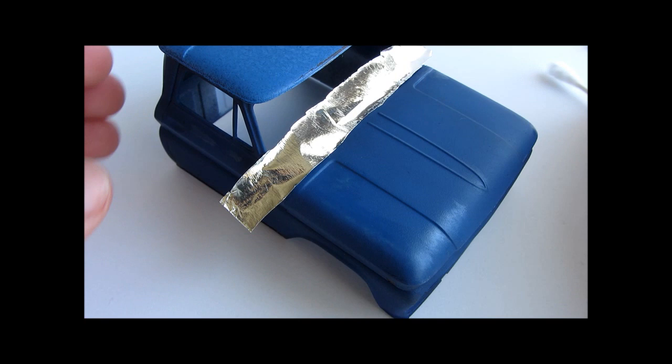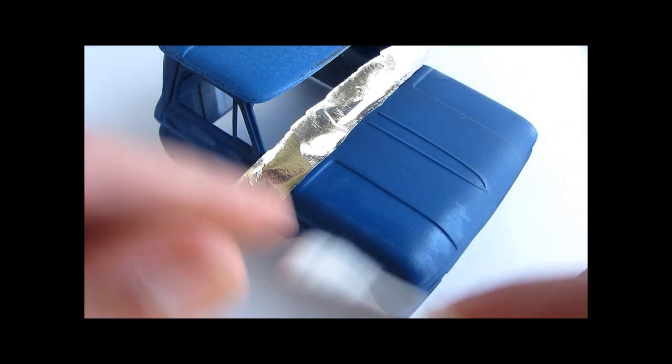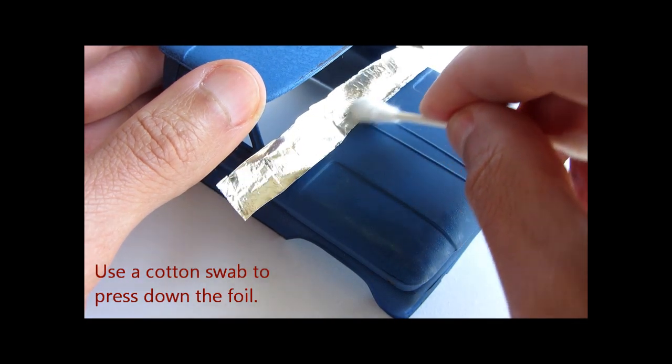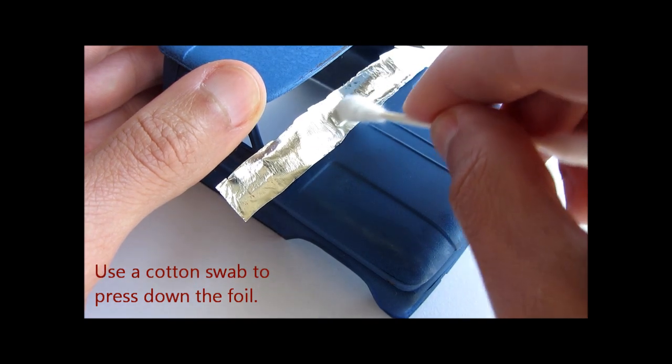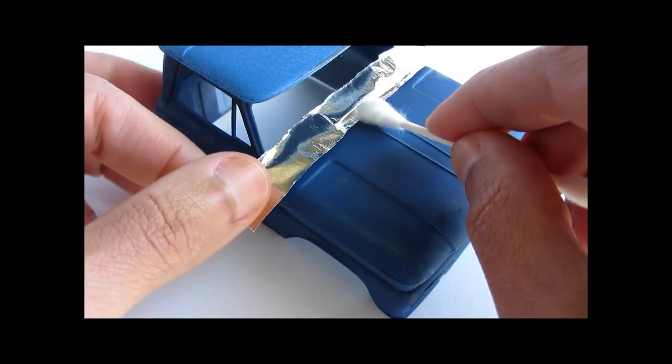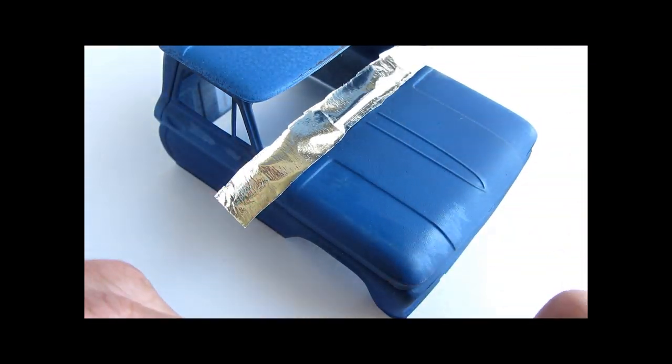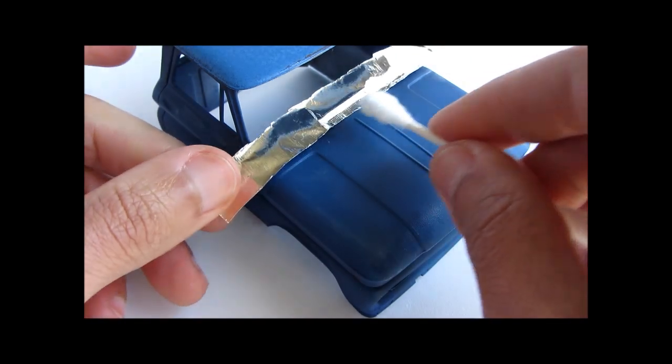Next, we'll use a cotton swab to really get it pressed down. Just rub against the model like we're showing here. If the foil lifts up, just press it back down and keep going.